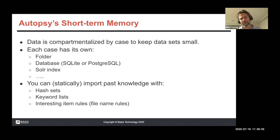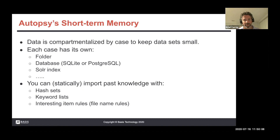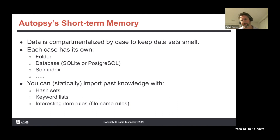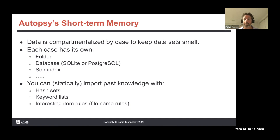Every case in Autopsy has a folder, it's got a database — whether SQLite or Postgres depending on if you're single user or multi-user — a Solr index, and other things, all contained at a case level. Given how much of forensics and response is based on the past, you can bring in past knowledge via hash sets, keyword lists, and a concept called interesting file rules — basically folder and file name rules to flag things. You can bring static information from past cases to help with your current case.